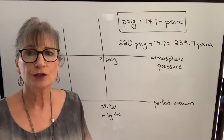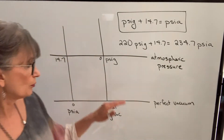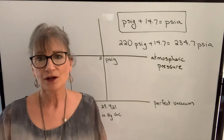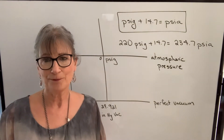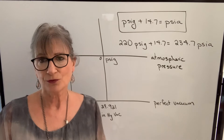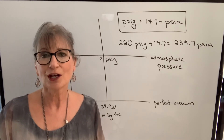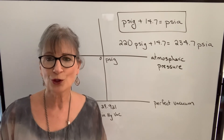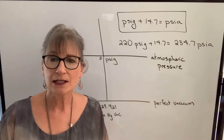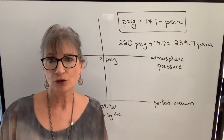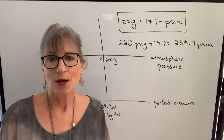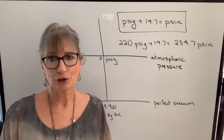If you get a pressure as a vacuum pressure — inches mercury vacuum — it's more difficult to convert to PSIA. You can look it up or use a calculator, but if you're interested in knowing how it's done, I'm going to show you the method I use. If you look elsewhere you'll see other methods, but this is how I like to convert.